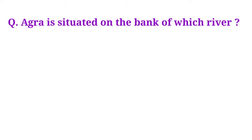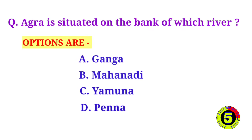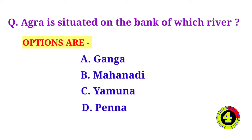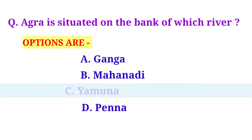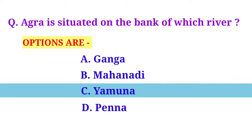Agra is situated on the bank of which river? Option C, Yamuna, is the correct answer.